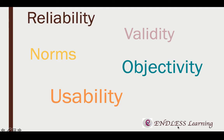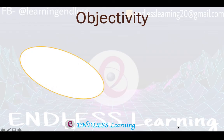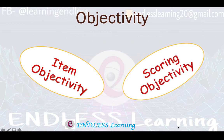Let us start with objectivity. Objectivity is an important characteristic of an evaluation tool. Without objectivity, the reliability and validity of a test become questionable. It is a prerequisite for both validity and reliability. Objectivity of a test indicates two things: item objectivity and scoring objectivity.